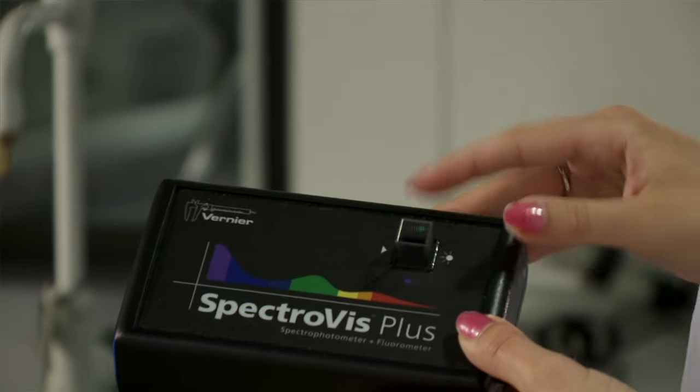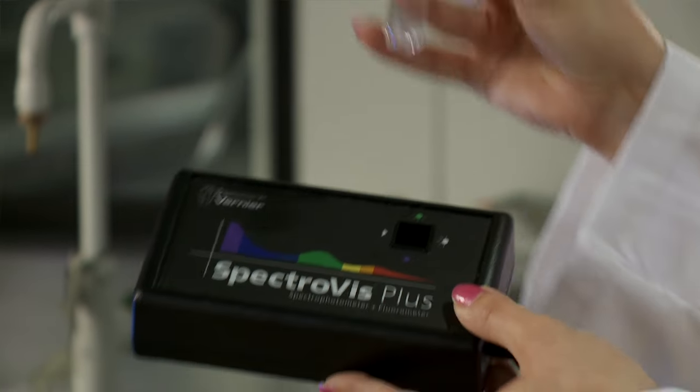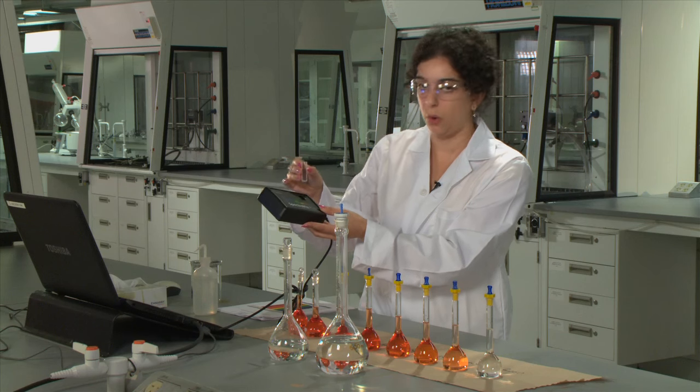So it will go in kind of like that. You don't want the frosted sides facing the detector and the lamp since that's going to redirect the light that's going through the sample.